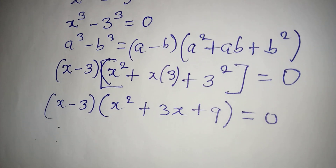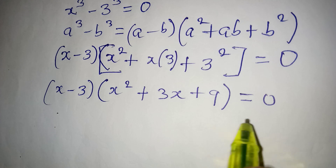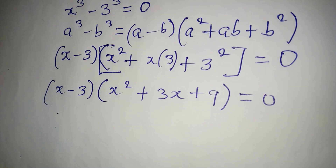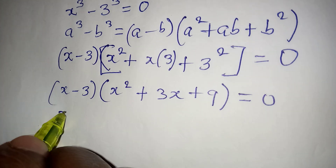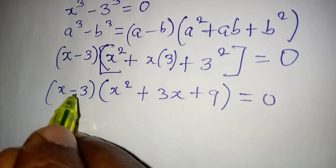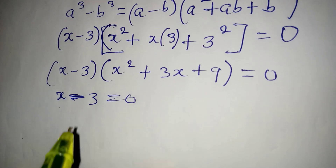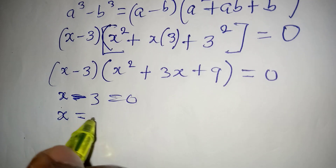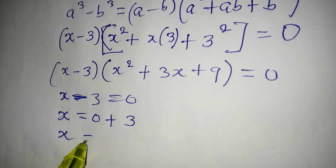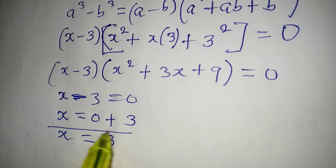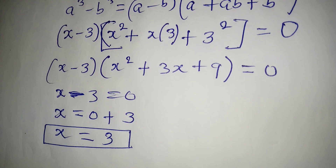How did I get the 9? That is 3 squared, right? Now, from here we can apply the zero product rule. Remember, we have to have 3 solutions. From x minus 3 equal to 0, x is equal to 0 plus 3, so x is equal to 3. This is the first value of x — we need 2 more solutions.